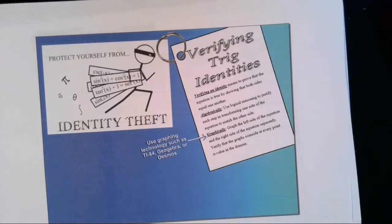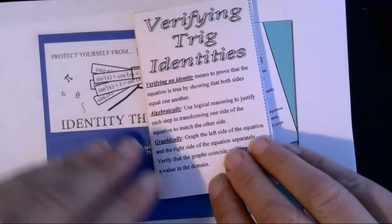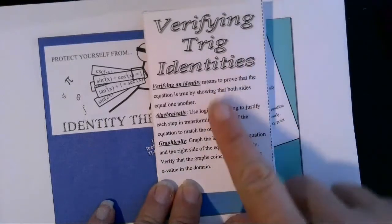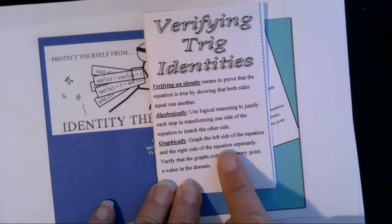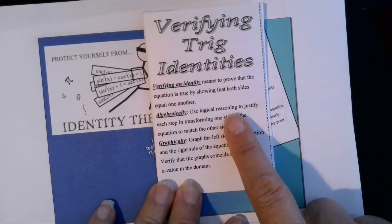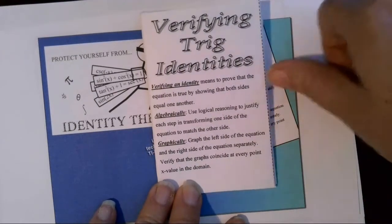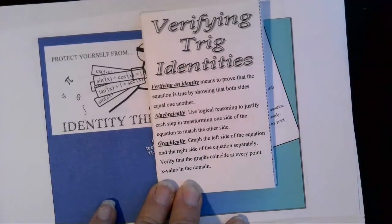In this lesson we're going to be working in the foldable notes booklet for verifying trig identities, and in this next series of videos we're going to verify trig identities first graphically and then algebraically. And to verify a trig identity means to prove that the equation is true by showing that both sides equal one another.